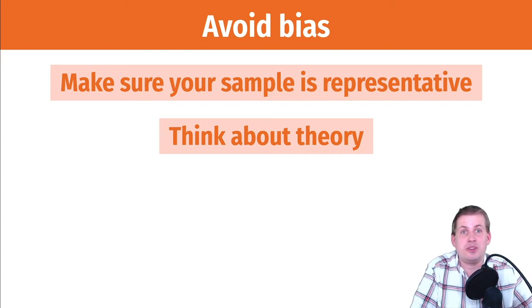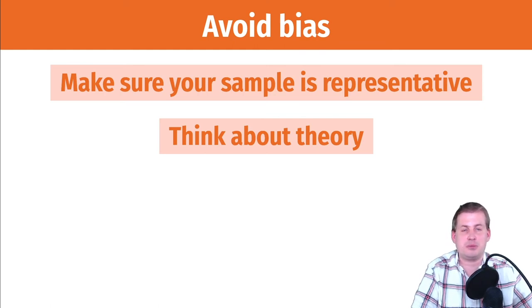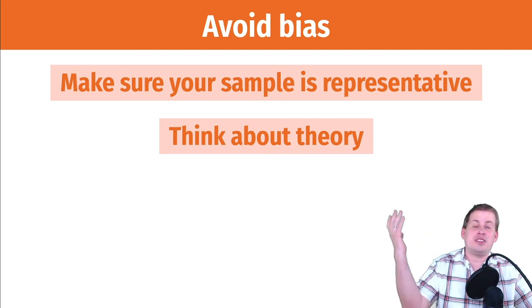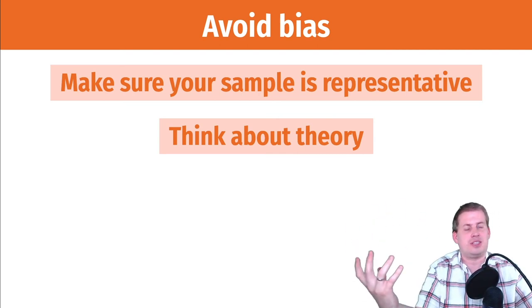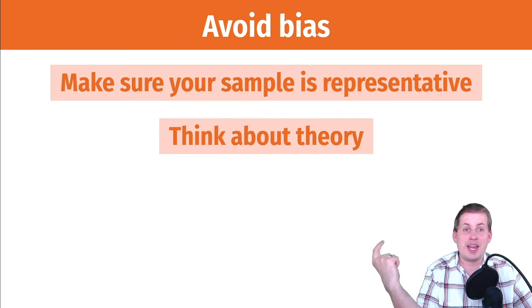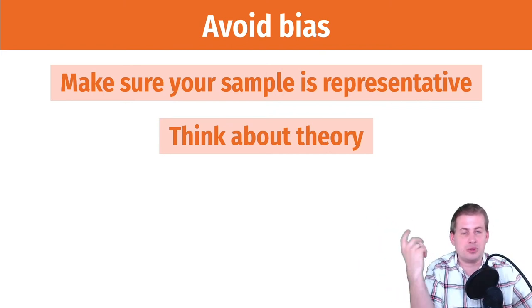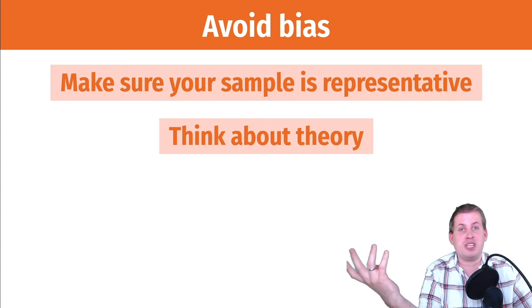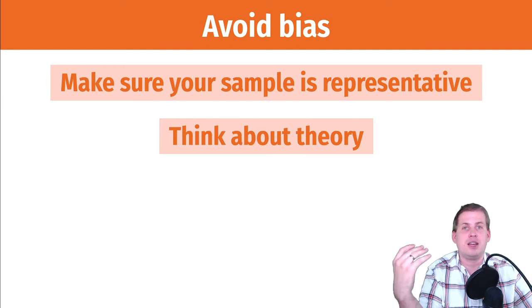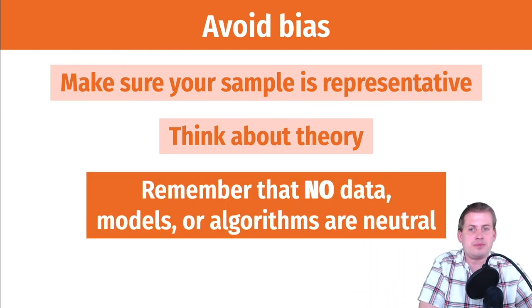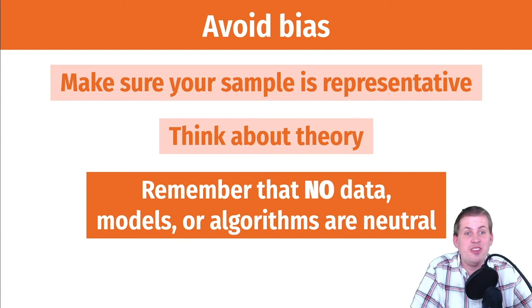When you do that, you get weird results — like Jared lacrosse players being your best employee. There's no theory in the world that says lacrosse-playing Jareds make the best employees; it only happened because there was no theory behind the model. When doing causal inference, make sure you have a well-specified DAG and aren't just throwing variables at your outcome to see what sticks, because that leads you down dangerous paths.